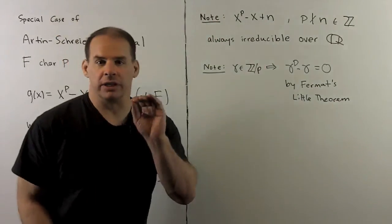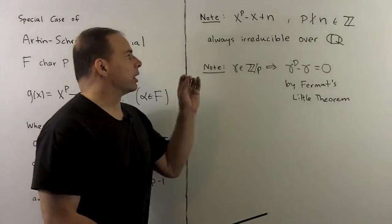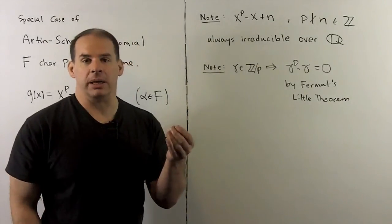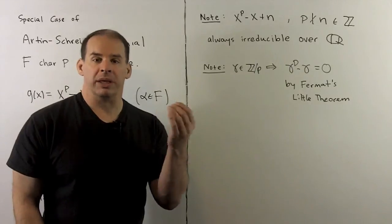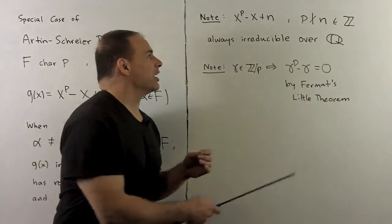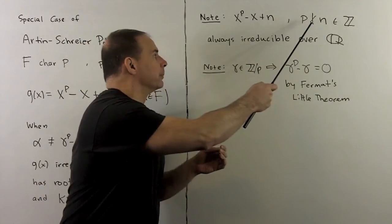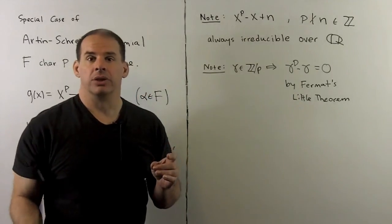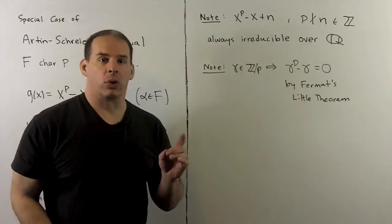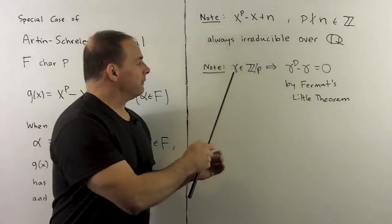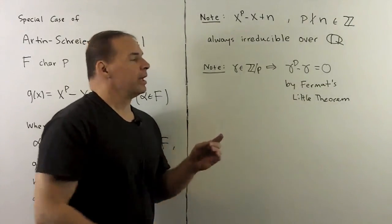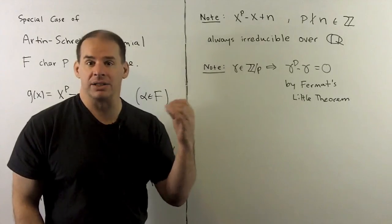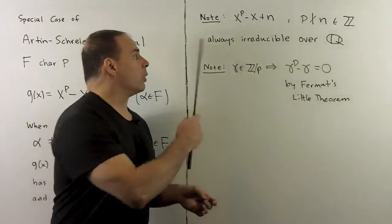Now, if we go back to the trick at the beginning, we consider polynomials over the rationals of the form x to the p minus x plus n, where p is a prime and n is an integer not divisible by p. This will always be irreducible over the rationals. Just use our work from before and we know it. If gamma is in Z mod p, then gamma to the p minus gamma is always equal to zero by Fermat's little theorem. So always irreducible.